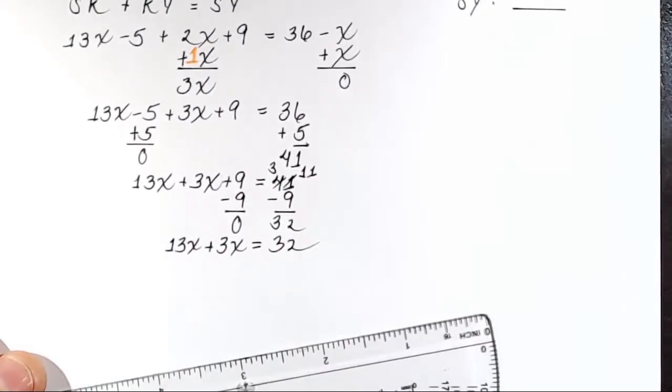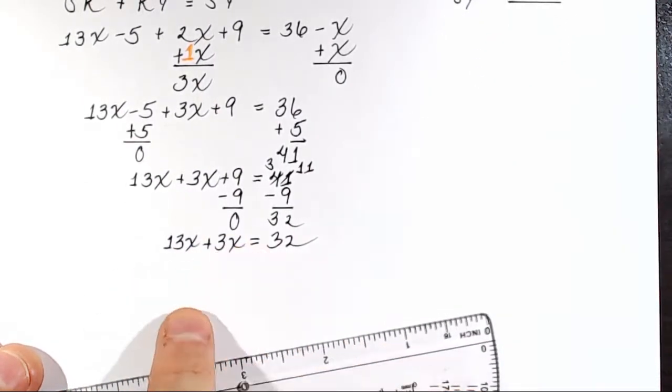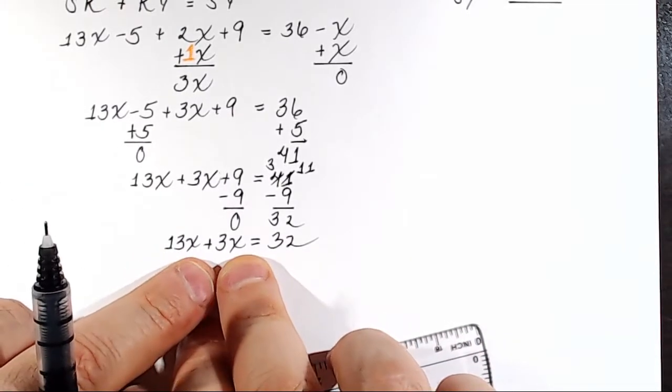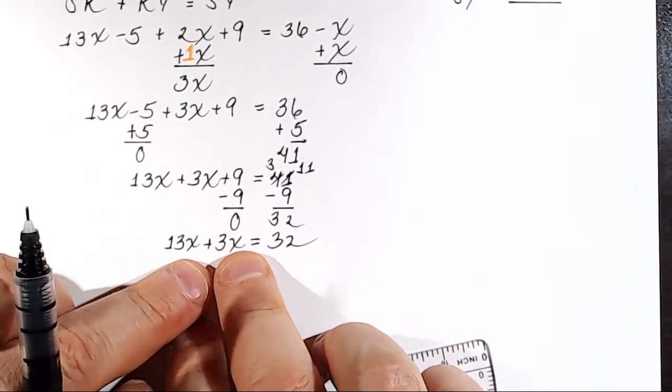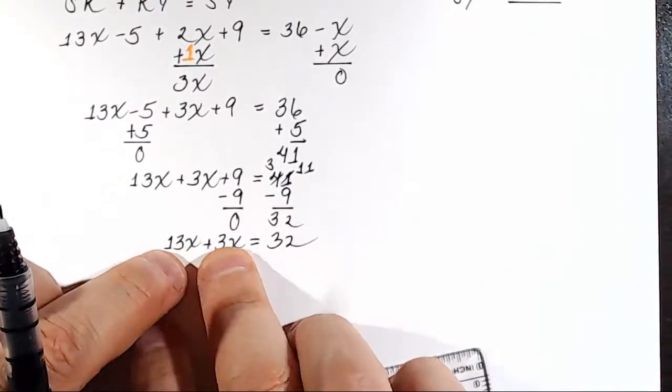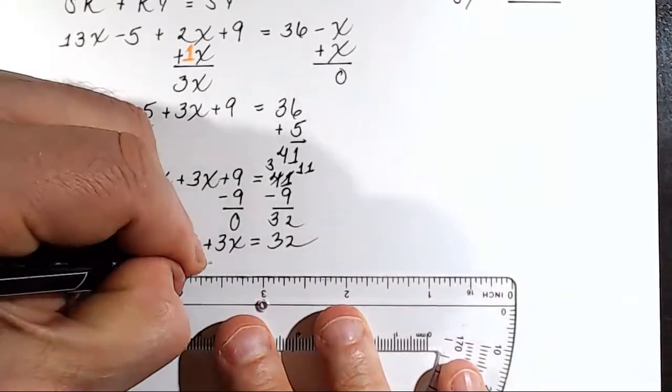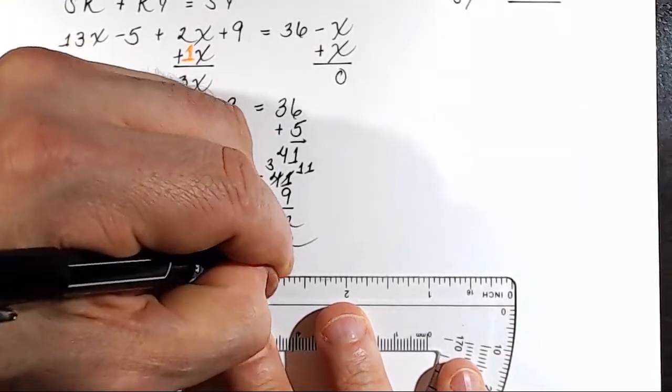So let's rewrite. Now I have 13X plus 3X equals 32. Well, now what do I do? I've got common terms over here - X and X. They just have different coefficients, but that's okay. When I have two variables that are the same, in the same degree, no squares, no cubes, nothing like that, just X, I can just add the coefficients: 13 plus 3. What is that? That's 16. So we put 16X equals 32.